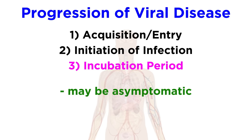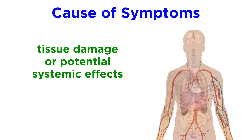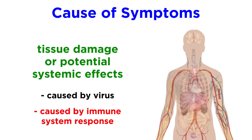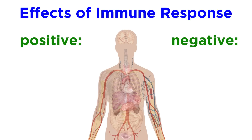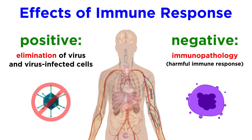As with bacterial diseases, viral infections can be asymptomatic during the incubation period, or they might cause non-specific early symptoms, which we call the prodrome. Ultimately, symptoms of a viral disease are caused by tissue damage or potential systemic effects, either caused by the virus itself or by the immune system's response. Immune responses can have both positive and negative effects. In some cases, the immune system may control the spread of the virus by eliminating the virus and virus-infected cells from the host, resolving the infection. In other cases, however, viruses can cause immunopathology, where an immune response is triggered that harms the host.